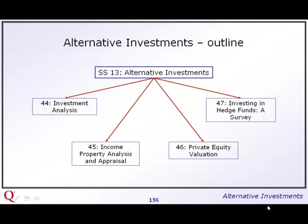Of the four chapters, the first two are pretty tiny. They are on real estate and are unchanged since last year — investment analysis and income property analysis, both pretty short chapters. Private equity valuation was new in 2011, and the complicated appendix at the end has been simplified enormously, so not so much work there. Hedge funds replaces two chapters from last year, giving a more unified approach. The chapter on commodities has been removed as it is now covered at level one. So we've got two little chapters on property, one on private equity, and one on hedge funds.